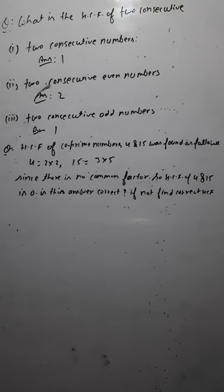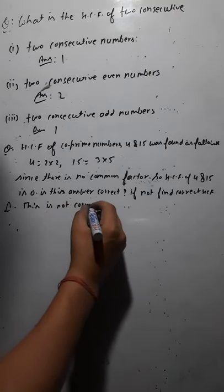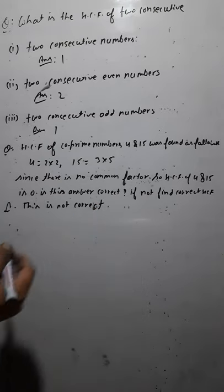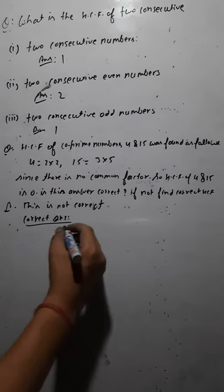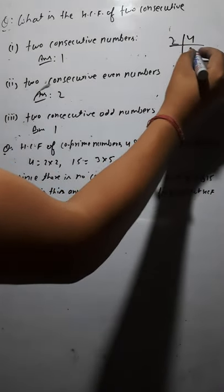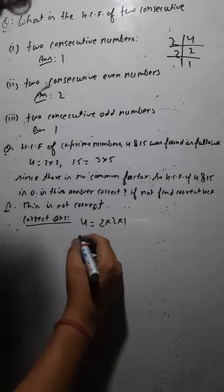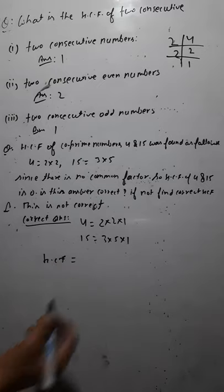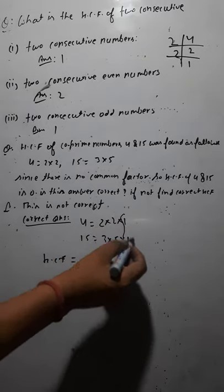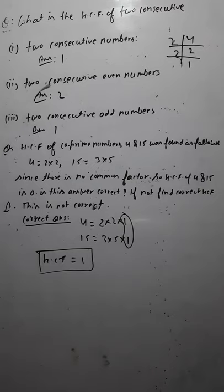It is not the correct answer. Let's find the correct answer. Prime factorization of four: two × two × one. Prime factorization of fifteen: three × five × one. Now if you see the common factor, the common factor is one. So the answer is one — HCF is one. This is the correct answer. Rather than writing HCF as zero, the correct answer is one, because one is always a common factor.